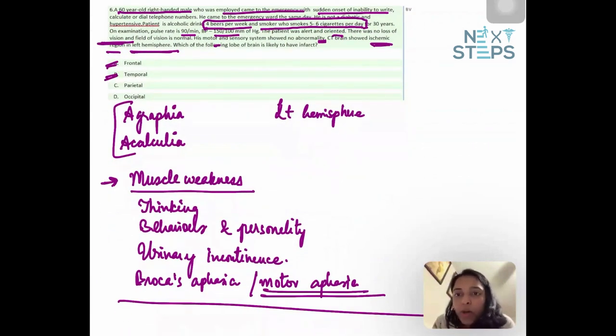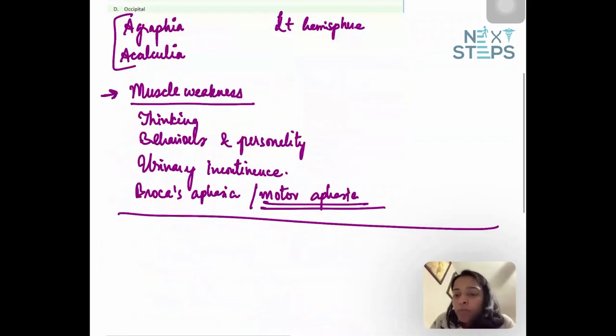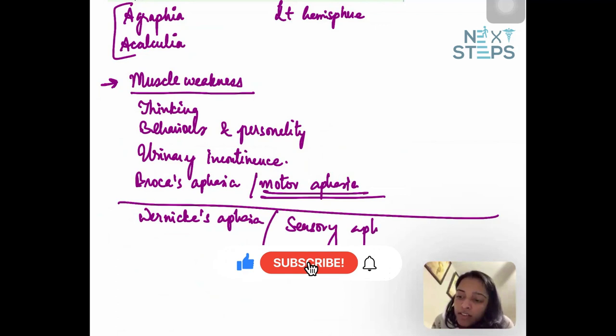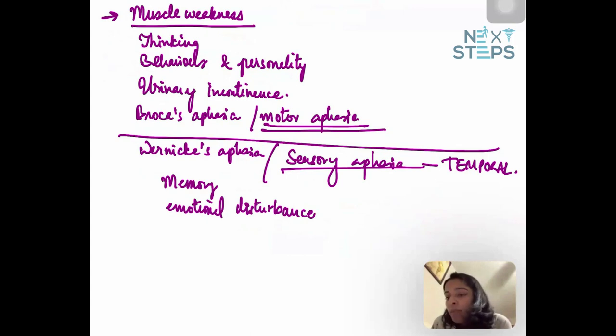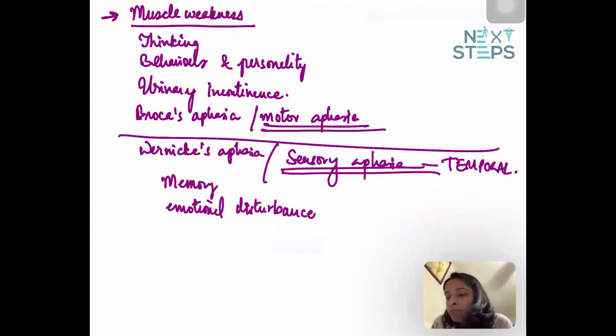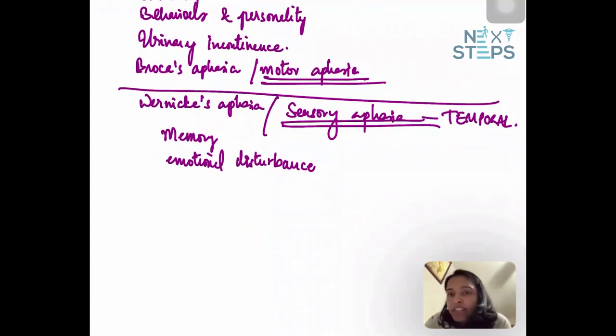The next option is temporal lobe. Temporal lobe infarcts are characterized by an aphasia called Wernicke's aphasia, which is a sensory aphasia. Also, a little memory and emotional disturbances might be seen. But in this sensory aphasia, patients will not be able to comprehend properly what other people are saying. So they will speak, but they will not be able to correlate with what other people are saying. So it's actually a comprehensive aphasia.